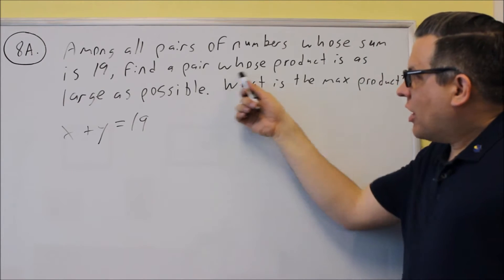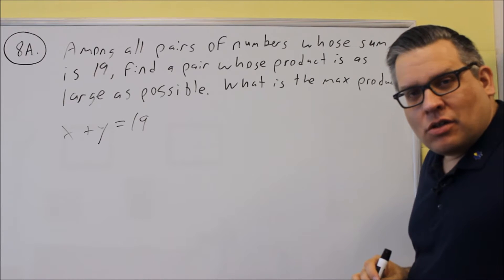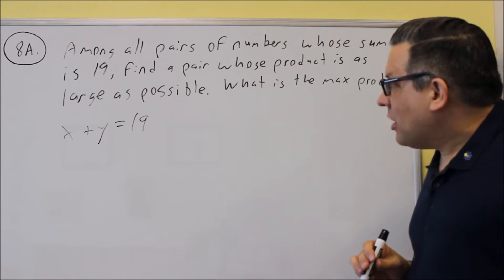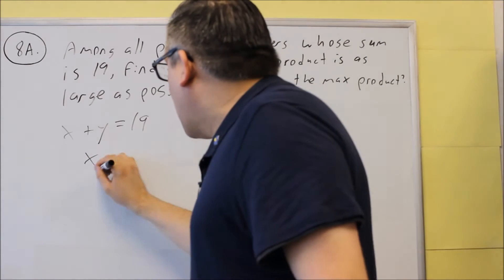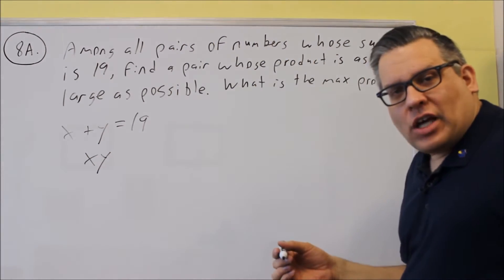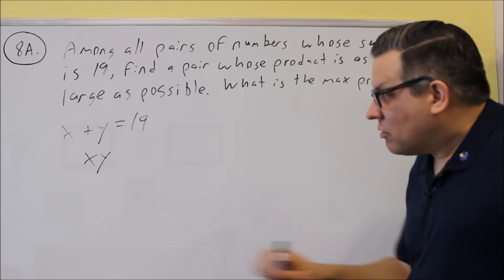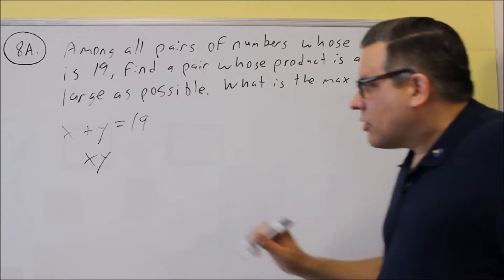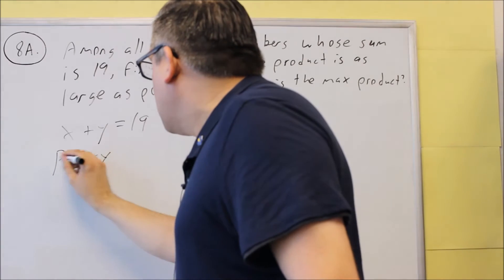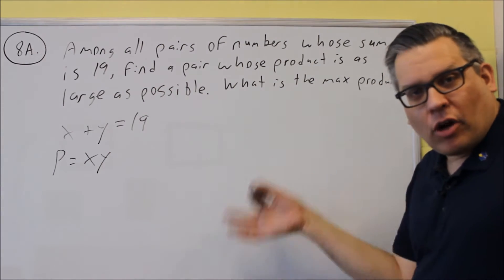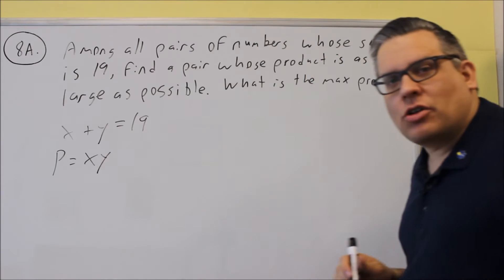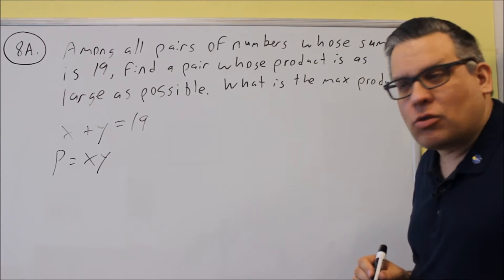Now the next thing it says is we got the word product. Okay, the word product means that you're multiplying two numbers together. So that means that I'm going to have to do x times y. But it would be nice if I made it into some kind of equation. This is not an equation here. So what I'm going to do is I'm just going to put p for product or I can use a for amount. Whatever I want to use is fine. In this case I'm just going to do p equals x times y.